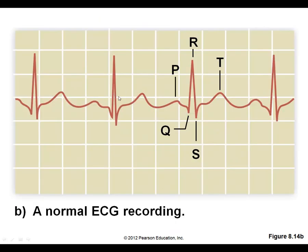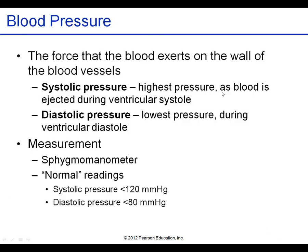Here is the same picture showing the P wave, the QRS complex, and the T wave. Once again: P wave = depolarization and contraction of atria; QRS = depolarization and contraction of ventricles; T wave = repolarization of the ventricles.